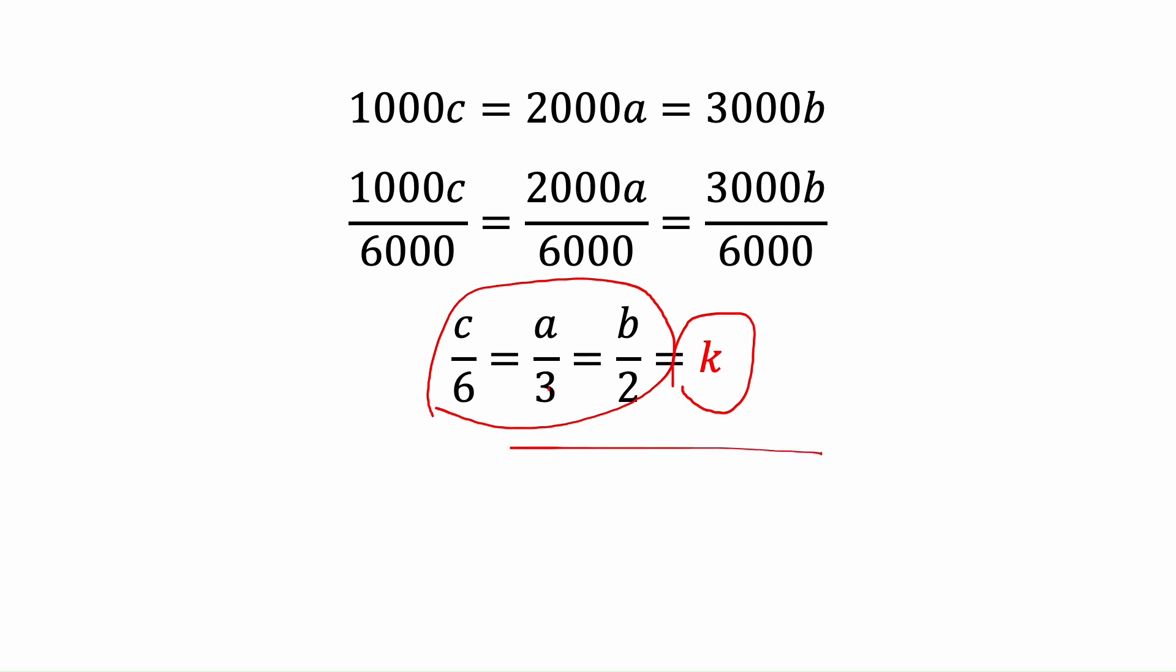So c over 6, a over 3, and b over 2 is equal to k. Now we can find all of our three variables based on k: a is 3k, b is 2k, and c is 6k.